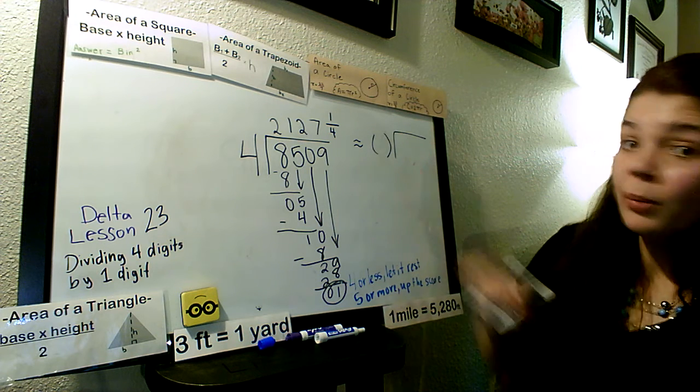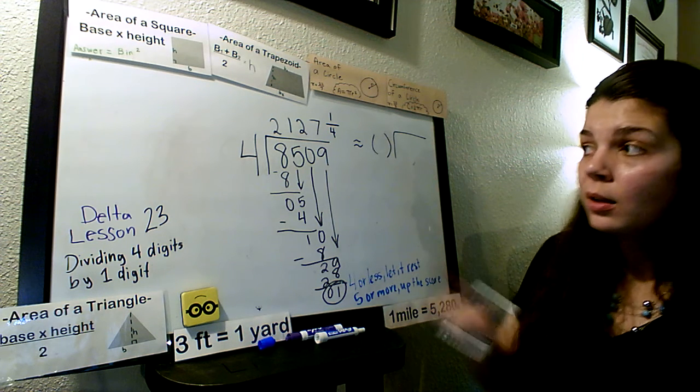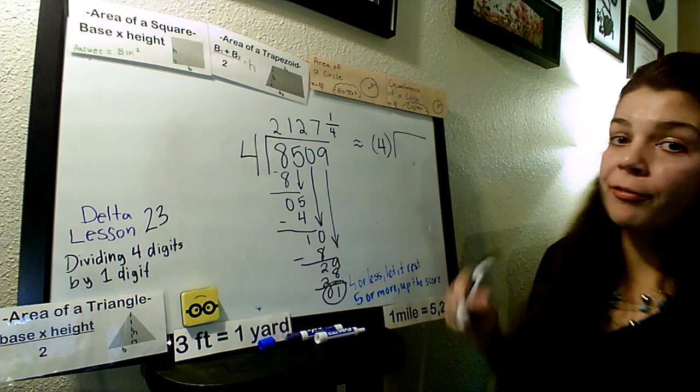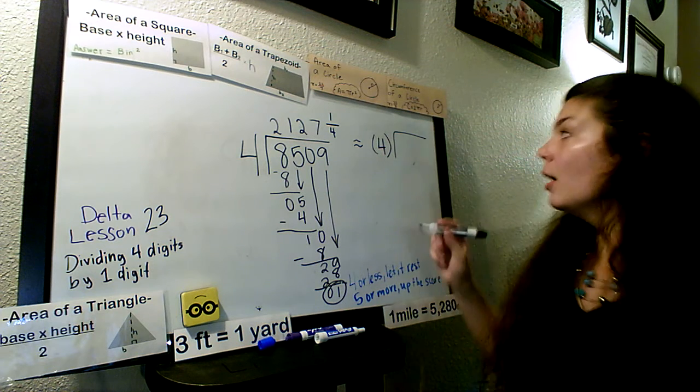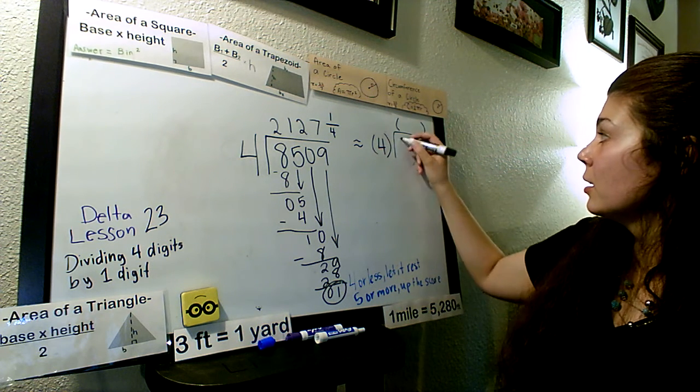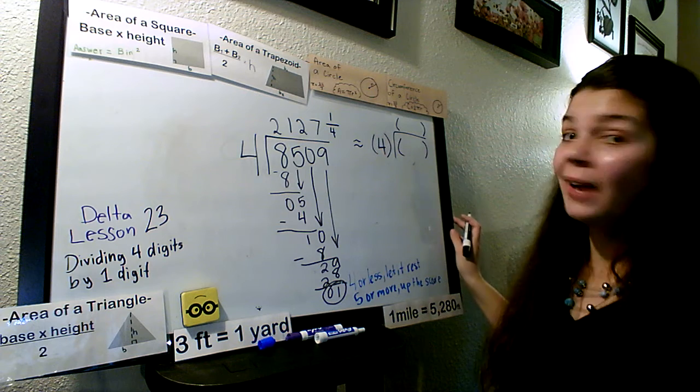Now we're going to go ahead and come over here and do our rounding. Okay. What number was supposed to stay the same? Our 4, our dividing number. 4 flies right on over. What two numbers change? Our answer and our divided number.